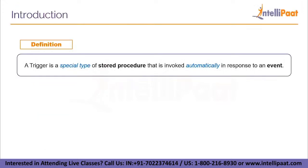Introduction. This is the formal definition of a trigger: a trigger is a special type of stored procedure that is invoked automatically in response to an event. As we can recall, a stored procedure is a set of SQL statements — usually a query — that you can save so the code can be reused over and over again. It is like a function in a programming language. An event here refers to a data modification made against a table — that is, any changes made to a table in a database.